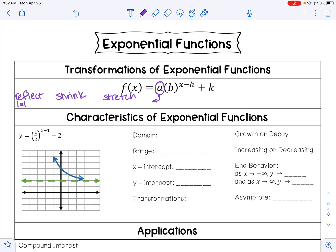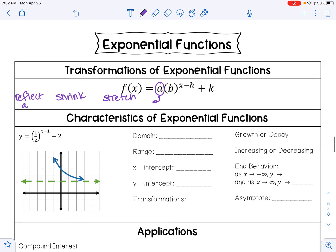If 'a' is less than 0, it's a negative number. It will be a shrink if 'a' is between 0 and 1, and it will be a stretch if 'a' is greater than 1.